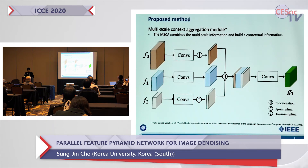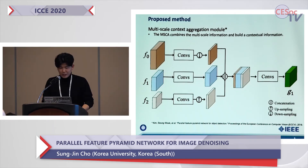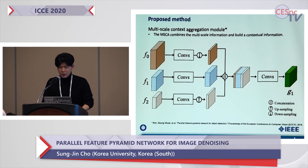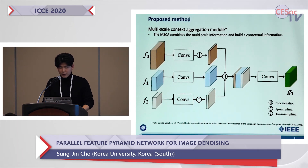This figure is an example of the MSCA module at pyramid level 1. The feature maps are refined using convolutional layers and resized to the size of F1. Then we concatenate the feature maps and apply a convolution operation to obtain contextual feature map G1.